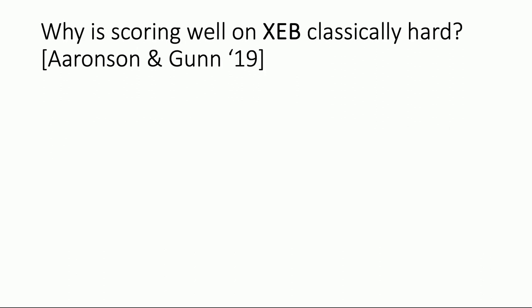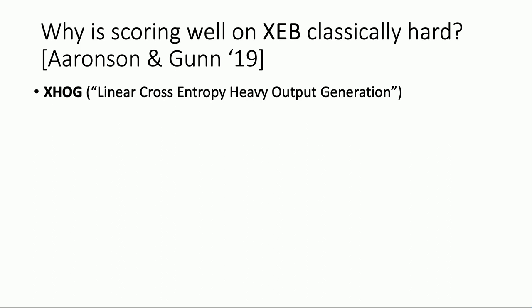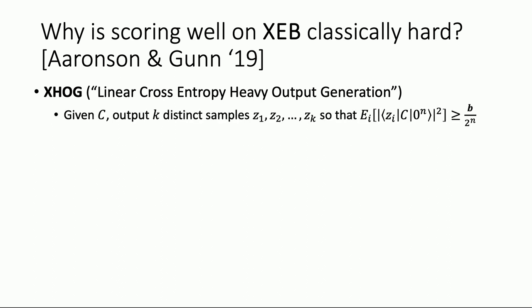But why is scoring well on XEB classically hard? This is exactly what Aaronson and Gunn studied in 2019. They came up with this problem called XHOG — X for linear cross entropy, HOG for heavy output generation. It's trying to formalize the intuition for why we might think that scoring well on linear XEB is a hard problem. Distributions that score well on XEB tend to share the heavy elements, the heavy outcomes — and that's the whole point.